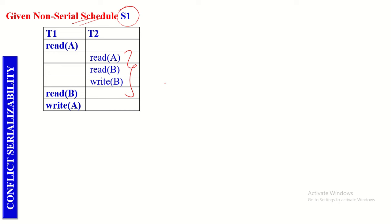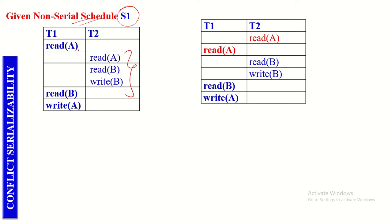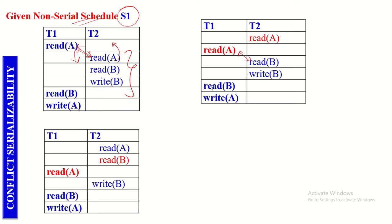Let us try to swap the Non-Conflict Operations in T1 and T2. These two operations are Non-Conflict — T1 and T2 are performing Read operations on the same Data Item A, and Read-Read never violates consistency, so they can be swapped. After swapping, this Read operation comes up and the other Read operation goes down. Then let us try to swap the next two operations — since T1 and T2 perform Read operations on different Data Items, it is also Non-Conflict, so it can be swapped successfully.